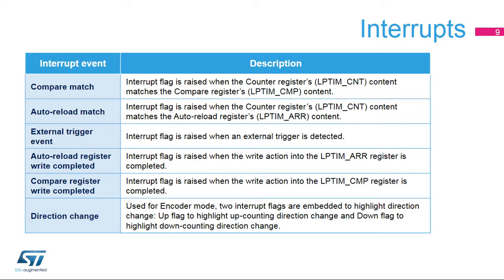The up and down direction-change interrupts are raised when the encoder mode function is enabled and the counting direction changes from up to down or vice versa. The counting direction of the low-power timer's counter reflects the rotation direction of the quadrature sensor.